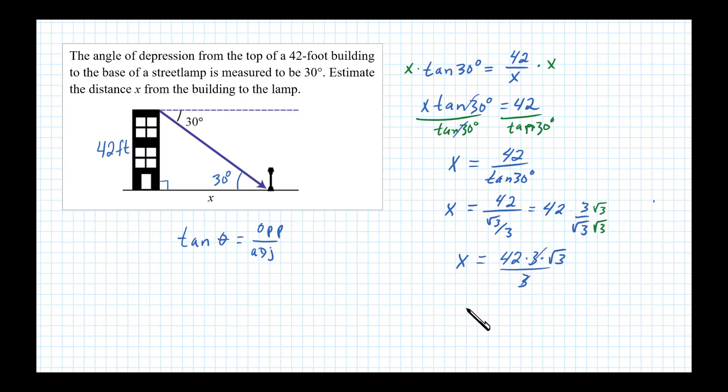Okay, and then these 3's cancel and we know then x is exactly equal to 42 square root of 3 feet. Okay, now that's the exact answer. Now what we want to do is present that as a decimal. So I'll go ahead and type that into a calculator and when I do that I'll say x is approximately equal to 72.7 feet. And that's the answer I'll present.